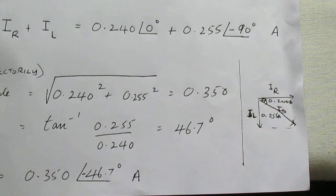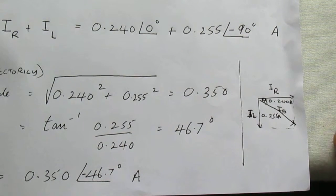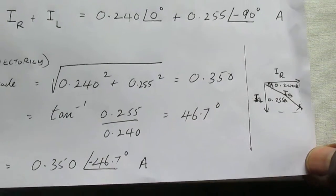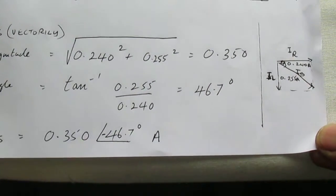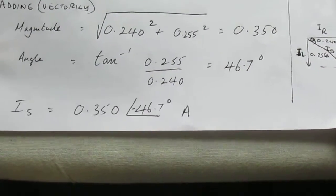Looking at the diagram on the right, you'll see that the inductive current is lagging by 90 degrees and the resistive current is along 0 degrees. So the supply current will lag at an angle, and that angle will be negative, resulting in minus 47 degrees.